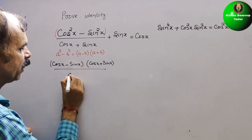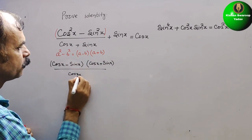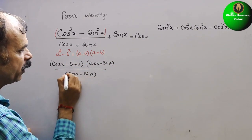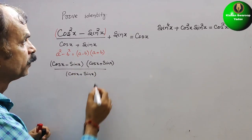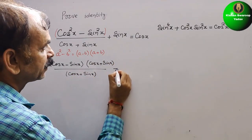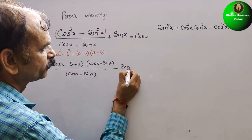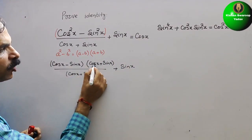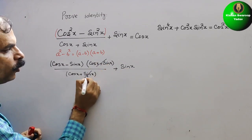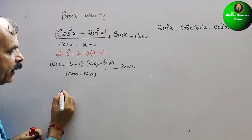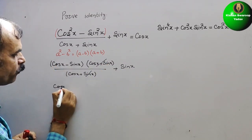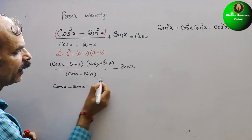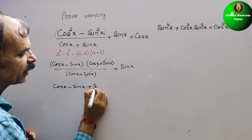The denominator is cos x plus sin x. So (cos x plus sin x) in the numerator and denominator cancel out. The remaining expression is cos x minus sin x.